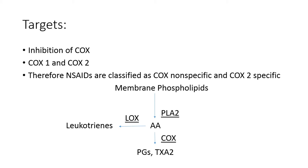NSAIDs work by inhibiting an enzyme called cyclooxygenase. There are two subtypes of cyclooxygenase: COX-1 and COX-2. Therefore, we can classify NSAIDs as either being COX-nonspecific, inhibiting both enzymes, or COX-2 specific, only inhibiting the COX-2 enzyme.